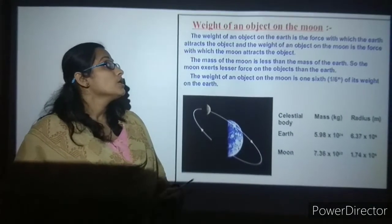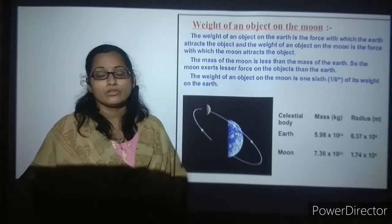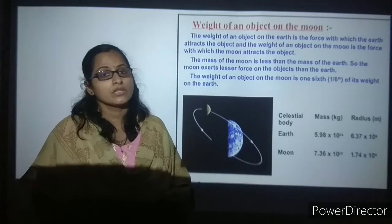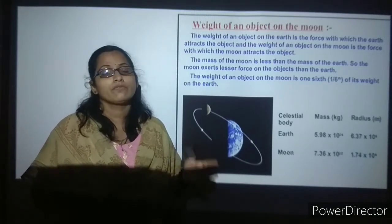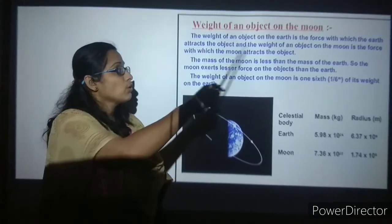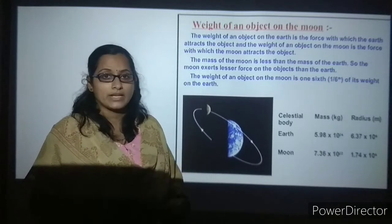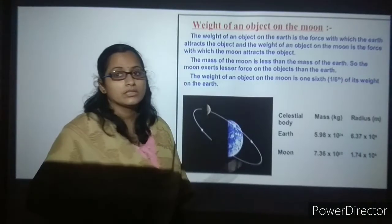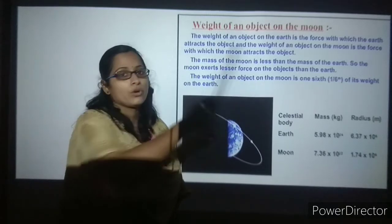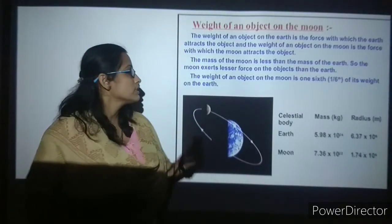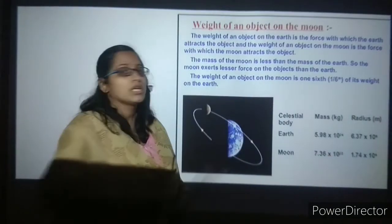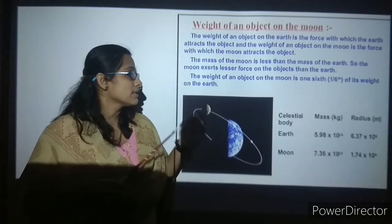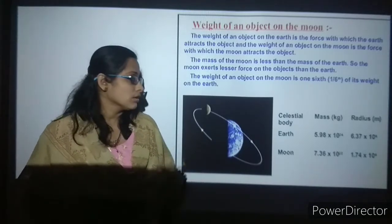Moving on to the next slide: weight of an object on the moon. We have spoken about weight on earth, but now we need to speak about weight on the moon. As told, weight can change from one place to another. The mass of the moon is less than the mass of the earth, so the moon exerts less force on objects — that is why objects float so low. The weight of an object on the moon is 1/6th of its weight on earth.